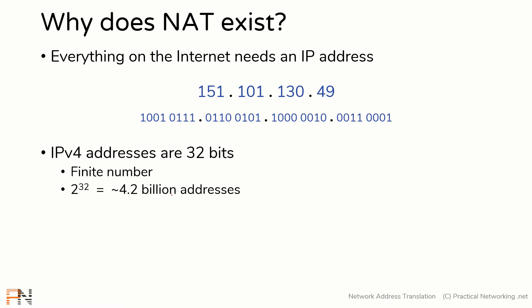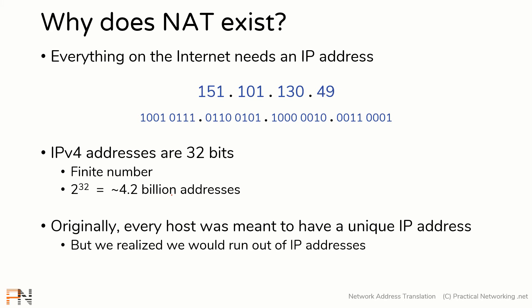The original intent of the internet was that every single host was meant to have a unique IP address, which means we could have no more than 4.2 billion hosts on the internet. But we realized we were going to run out of IP addresses. The world has about 7 to 8 billion people, and if we want the entire world to communicate on the internet — which is a desirable goal — we definitely don't have enough IP addresses to account for all of them.